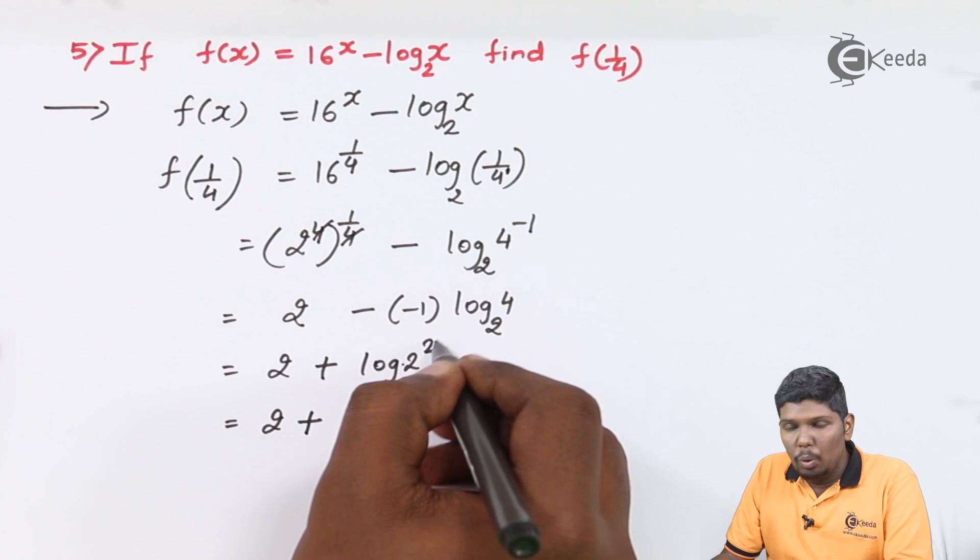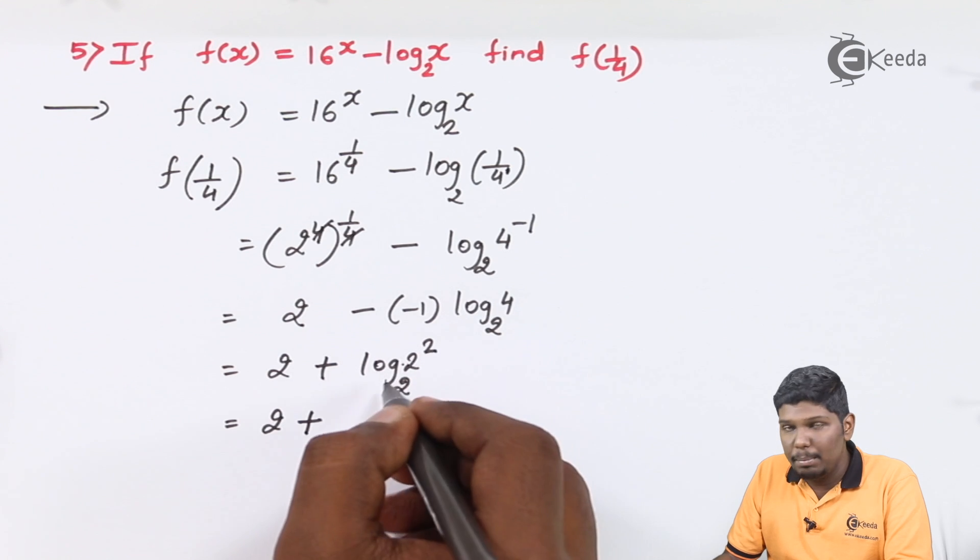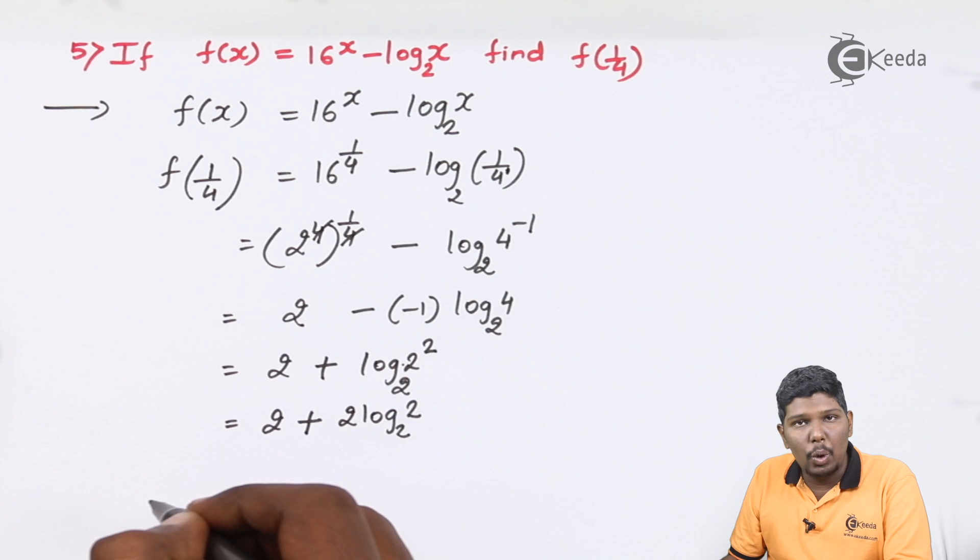2 plus log 2 to the power 2. The problem will be solved using the formula log a raised to m becomes m log a. So this becomes 2 log 2 to the base 2.